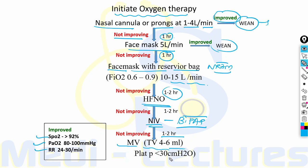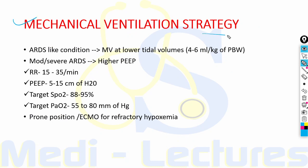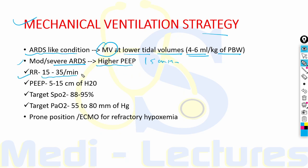In COVID, mechanical ventilation is given for an ARDS-like condition at a lower tidal volume of 4 to 6 ml per kg of predicted body weight. In moderate to severe ARDS, higher PEEP is kept — up to 15 centimeters of water. Respiratory rate is 15 to 35 per minute. Target SpO2 is 88 to 95%; target PaO2 on ABG is 55 to 80. Prone position or ECMO can be used for refractory hypoxemia.